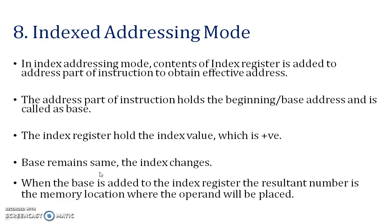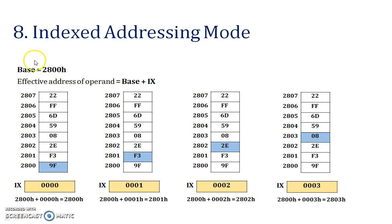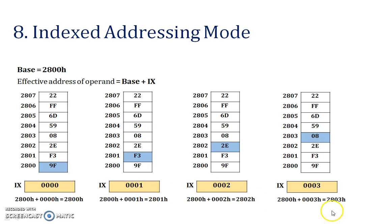Next — index addressing mode. The content of the index register is added to the address part of the instruction to obtain the effective address. The equation is: Effective Address = base + index register value. In the example, the base is 2800 and the index register value is 0000, so 2800 + 0 = 2800. Our effective address is 2800 and the data is 9F. Three more examples are shown: for index register values 00, 01, 02, and 03, the effective addresses are 2800, 2801, 2802, and 2803 respectively.